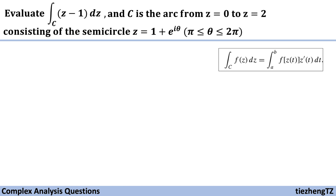The contour integral formula is: integral over C of f(z) dz equals integral of f(z(t)) times z'(t) dt. In our question, we are using theta. So f(z(theta)) equals z minus 1, which becomes e to the power of i theta. And z'(theta) equals e to the power of i theta times i.